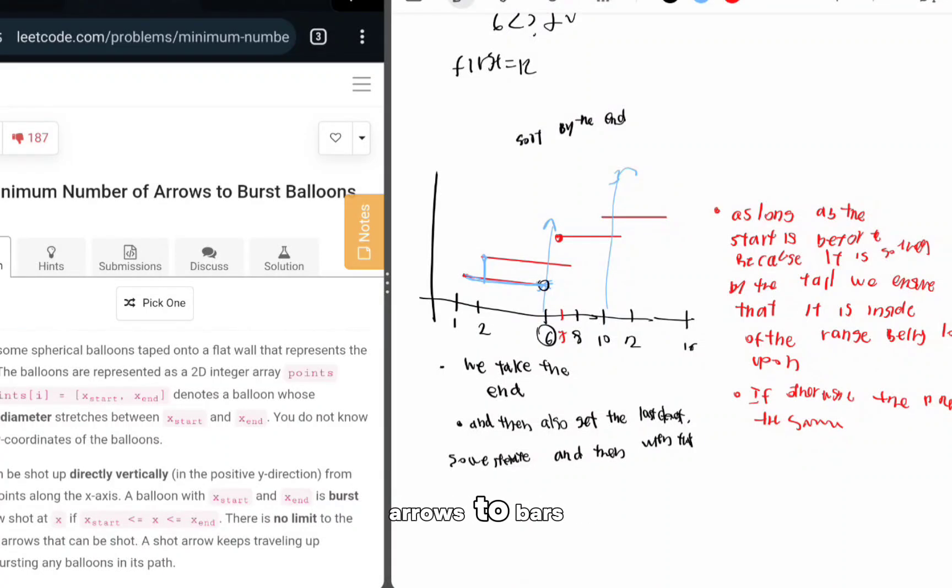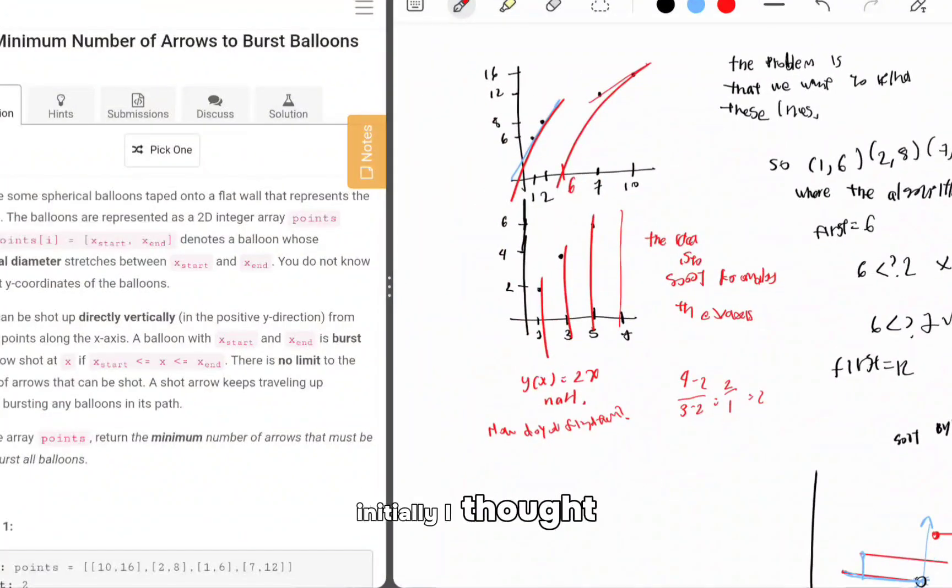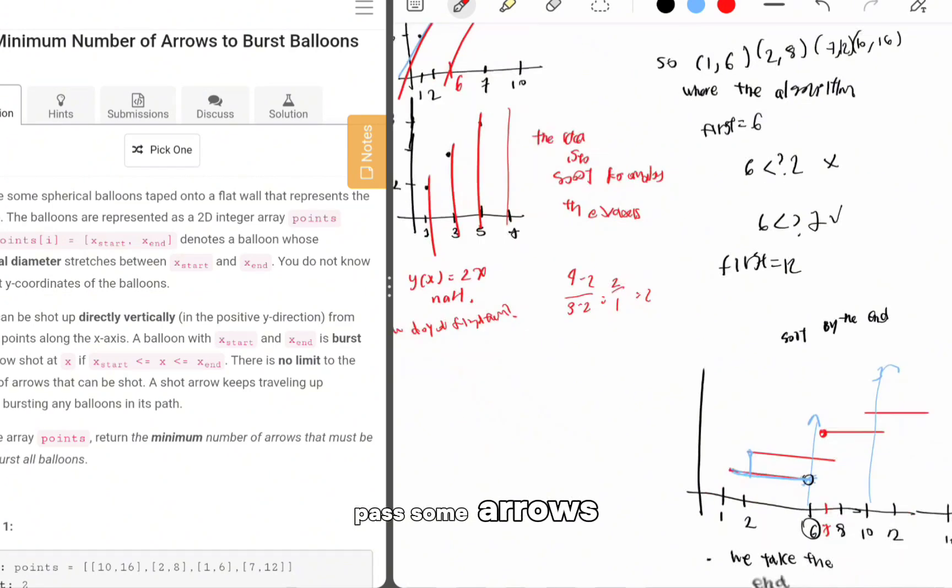Minimum number of arrows to burst balloons. The problem is actually easier than what it looks like. Initially, I thought that you had some points on the xy plane and you had to pass some arrows. I was wrong.